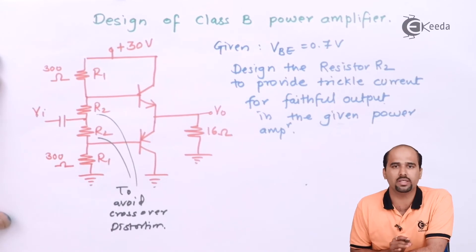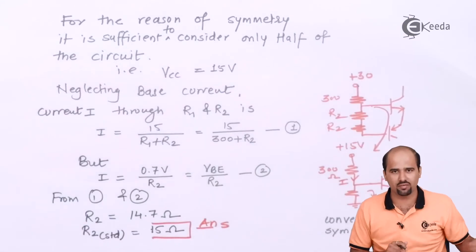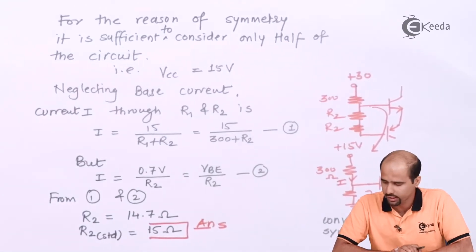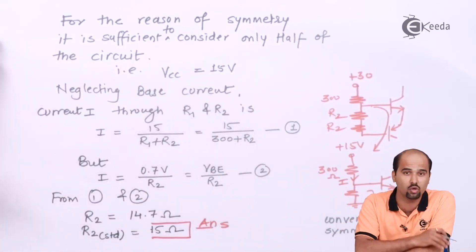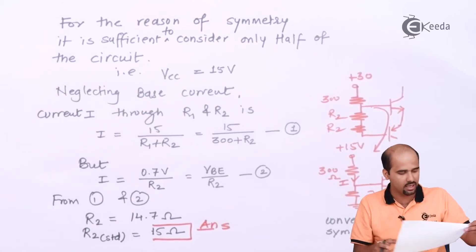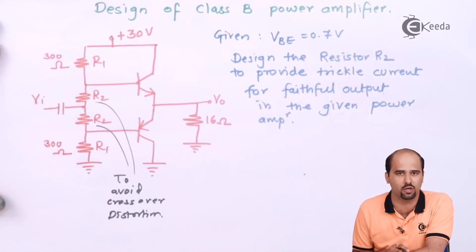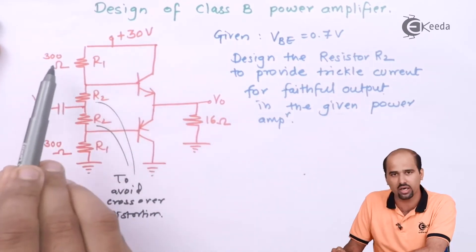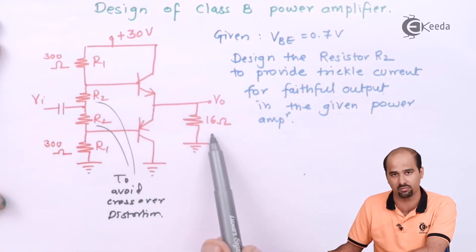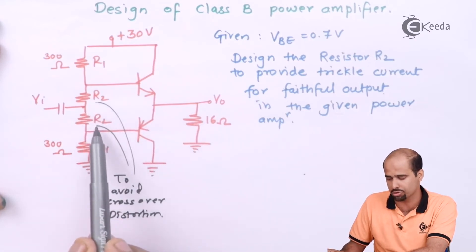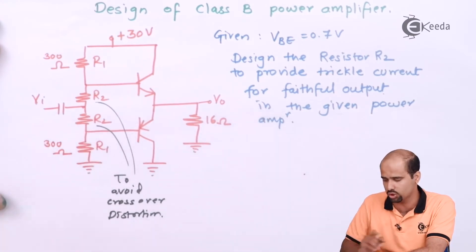This gives you a type of Class AB power amplifier. All the values are given; we just have to find the value of R2. I know that VCC is 30 volts. In this particular circuit, all the values show the symmetrical nature — 30 volts, 300 ohm and 300 ohm, both transistors given, load given. R2 and R2 also show it's a symmetrical nature.